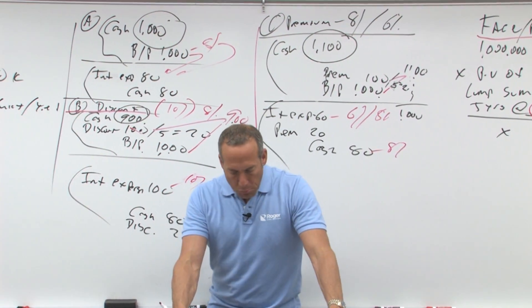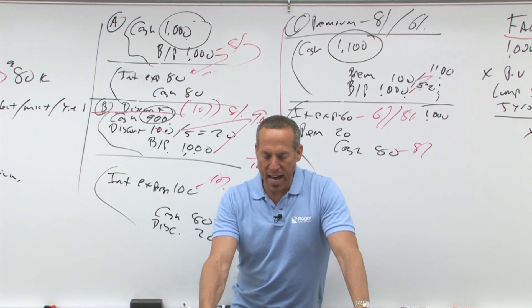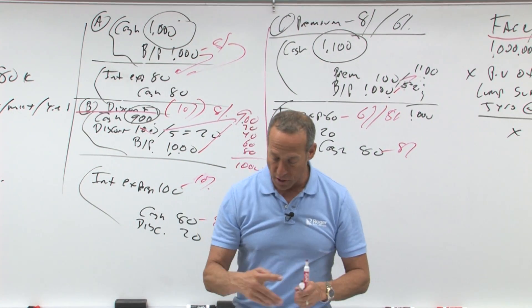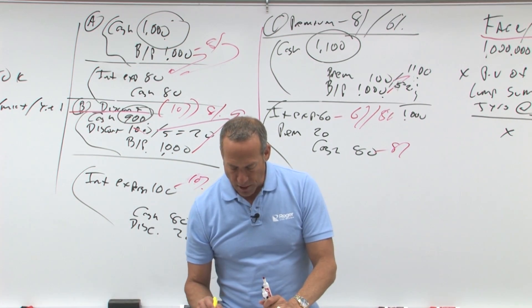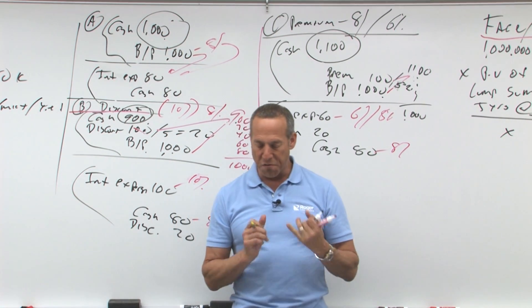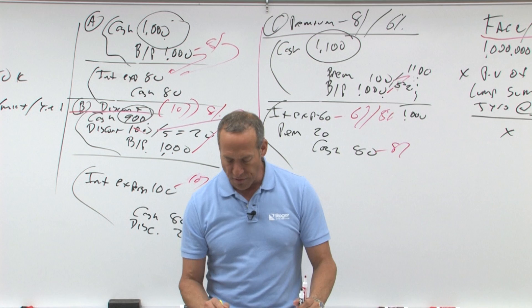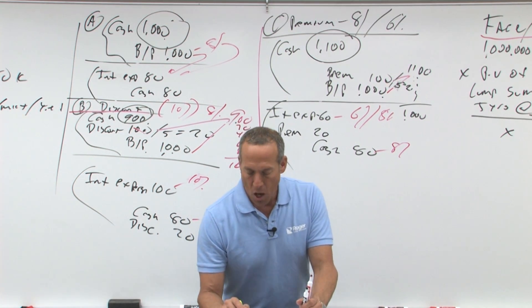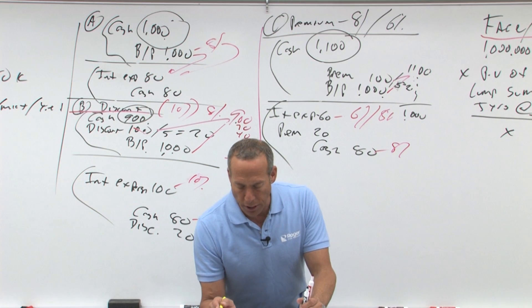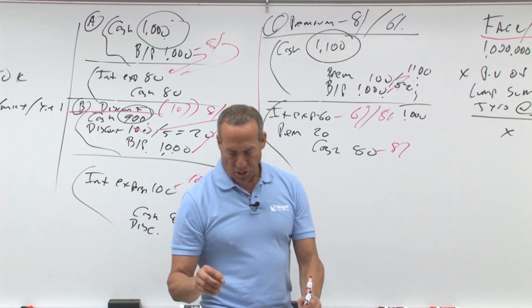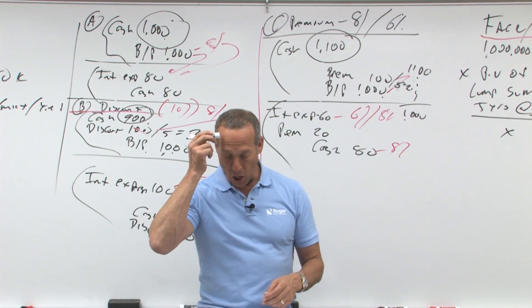That is present valuing those two elements. So if you look in your notes, it says the next consideration is how to calculate the proceeds from the issuance of the bond. To calculate the present value two amounts, present value of the face of the bonds, face times present value of a lump sum, plus present value of the interest, which is an annuity, face times stated times time of an ordinary annuity. The sum of these two amounts represents the present value of the bonds.